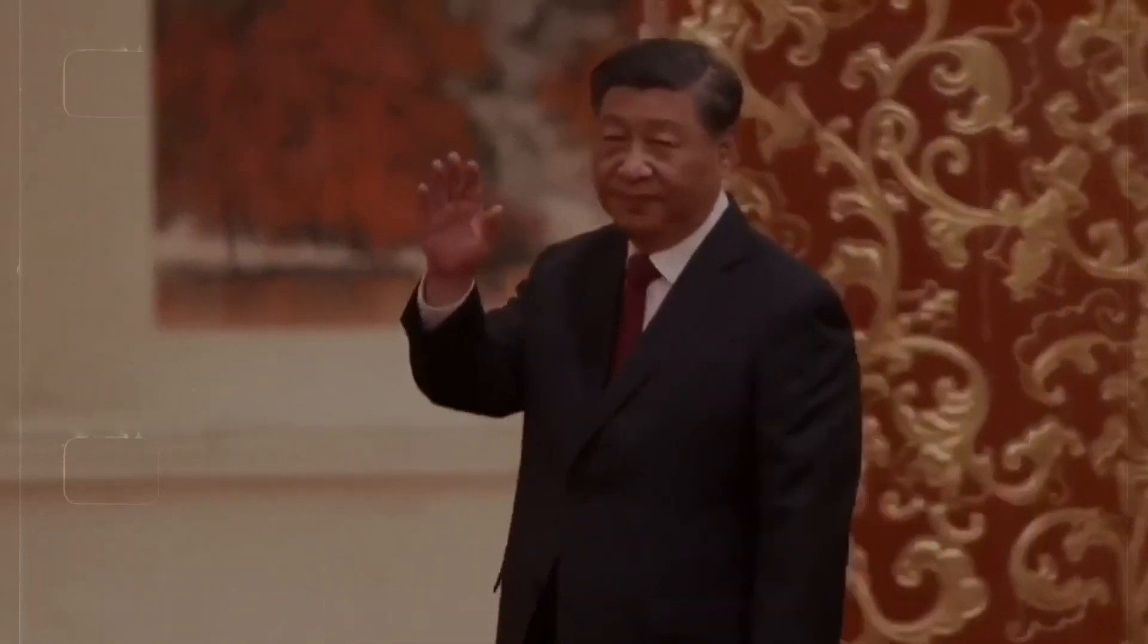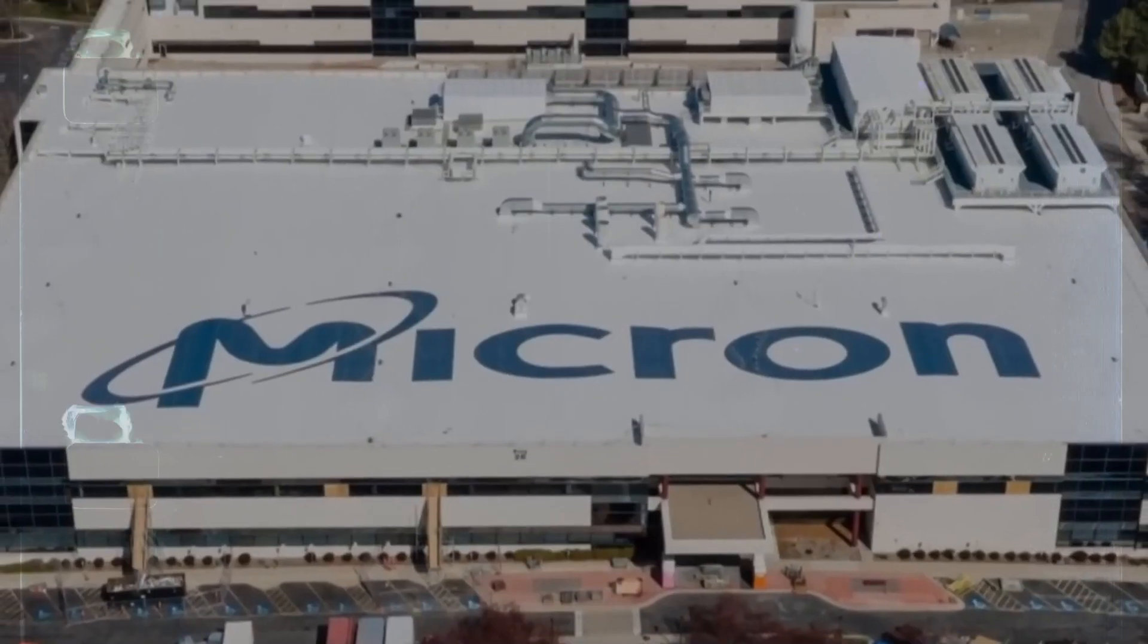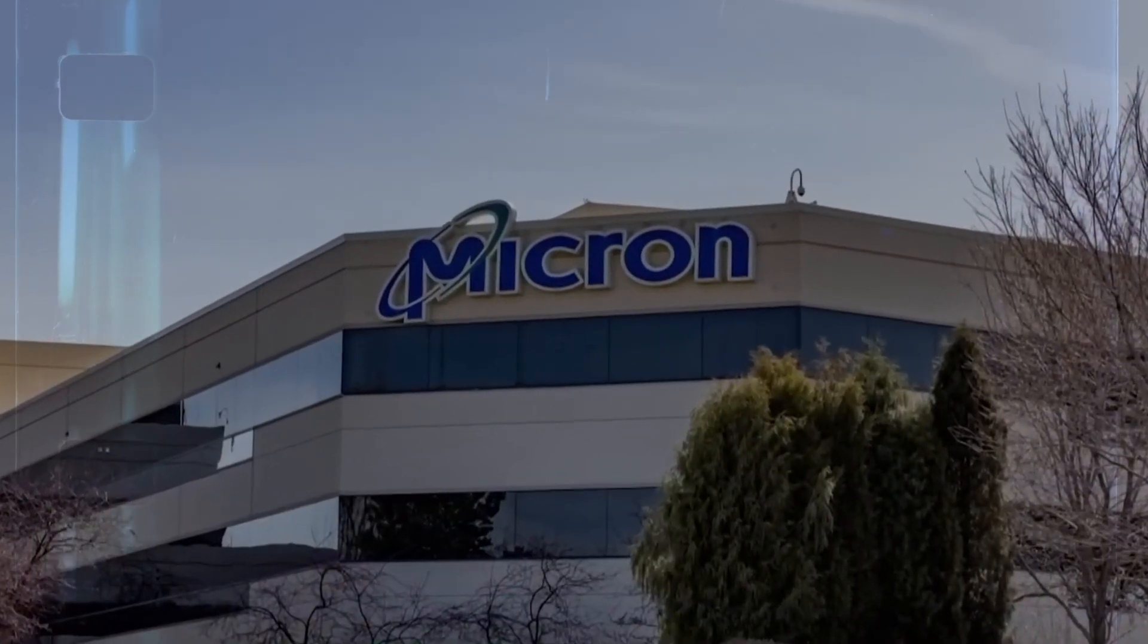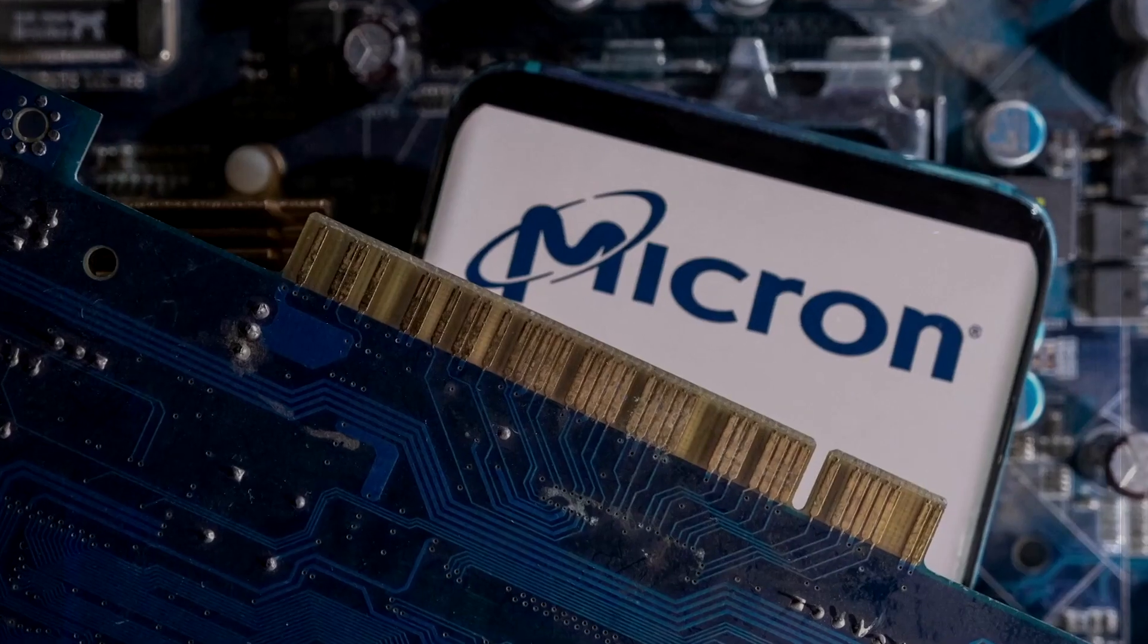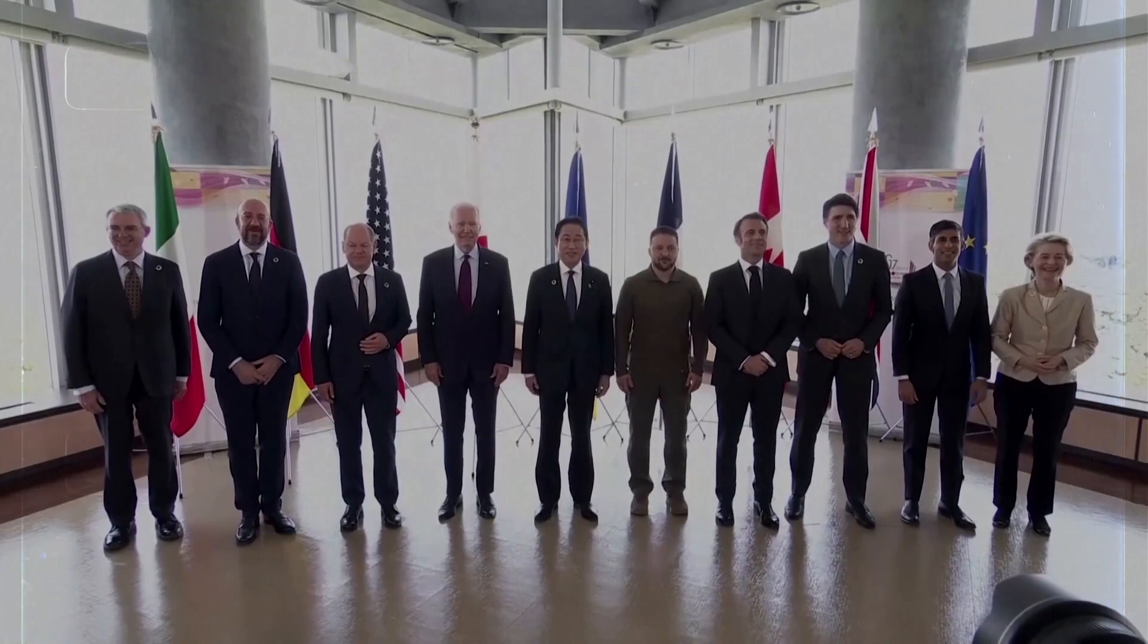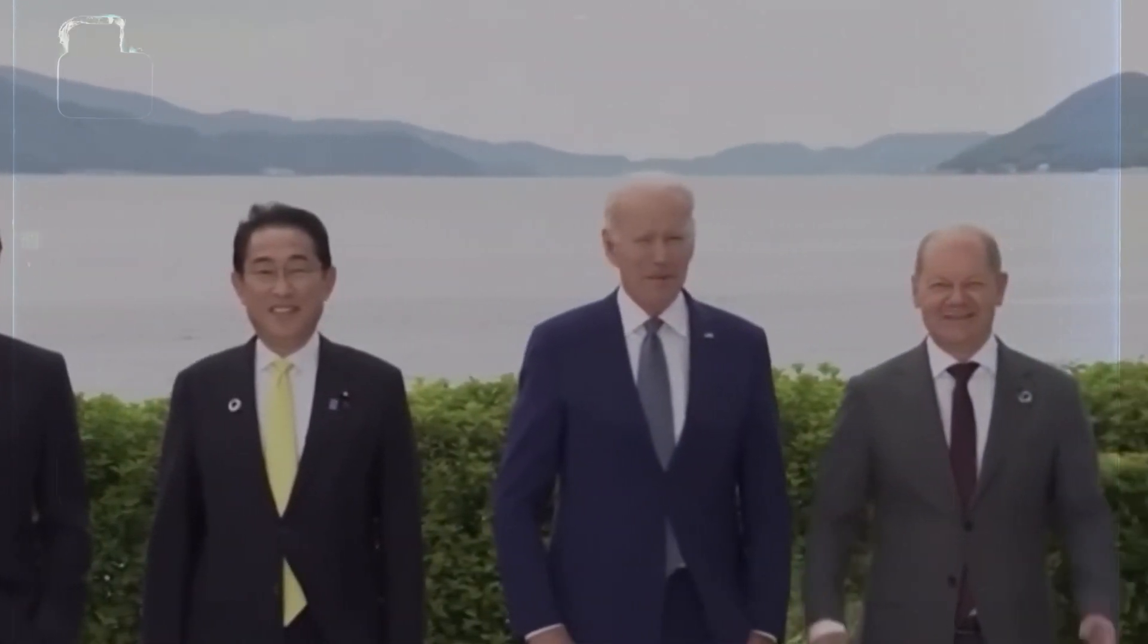Unsurprisingly, China responded with a calculated counterstrike. American giant Micron Technologies, the leading US memory chipmaker, was barred from selling to critical national infrastructure operators within China. This action, seemingly propelled by security considerations and apprehensions about Micron's products, coincided with the G7 summit in Hiroshima, where the rising threat from China was a prominent talking point.